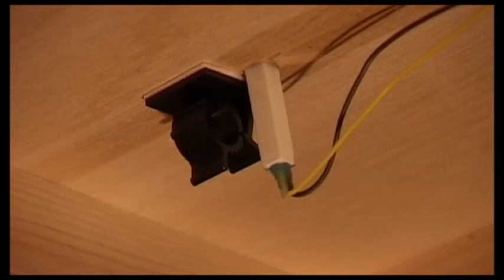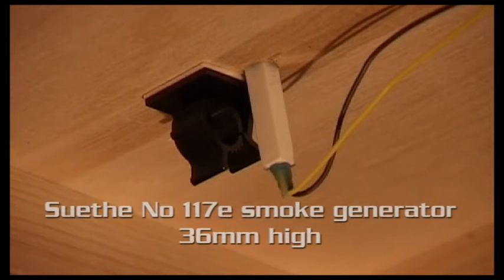So this is how the smoke is done on Kato Pass. This is a Seuthe No.117 smoke generator and it's around an inch in length. It has two wires coming off it and you simply connect it to the 16 volt output of your controller.